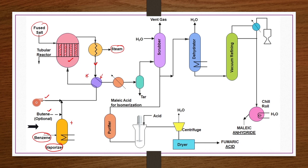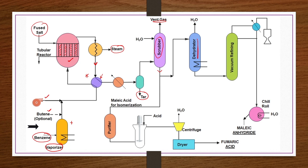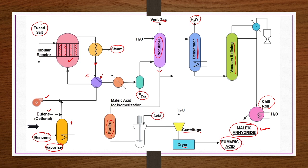The product mixture is passed through a condenser to separate tar, then to a scrubber where vent gases are scrubbed, yielding a 40% maleic acid solution. This solution is taken to a dehydrator to remove water, and the subsequent product is taken to vacuum refining for further purification. The product is chilled to collect maleic anhydride. A portion of the product mixture from the scrubber undergoes isomerization to produce malic acid, which is then purified, isomerized using acid, centrifuged, and dried to yield fumaric acid as a co-product.